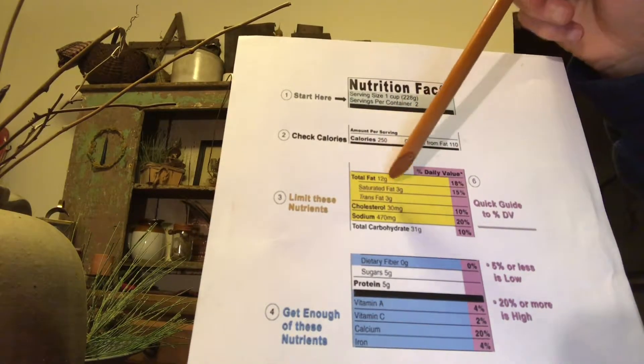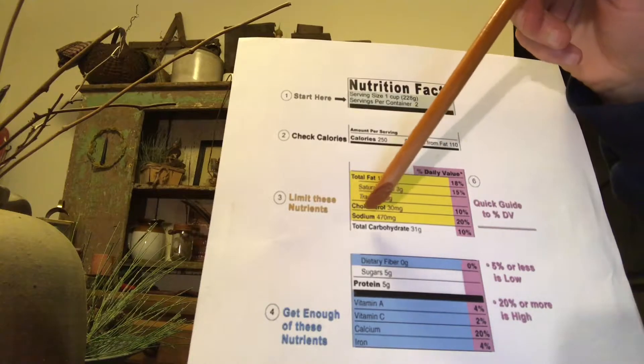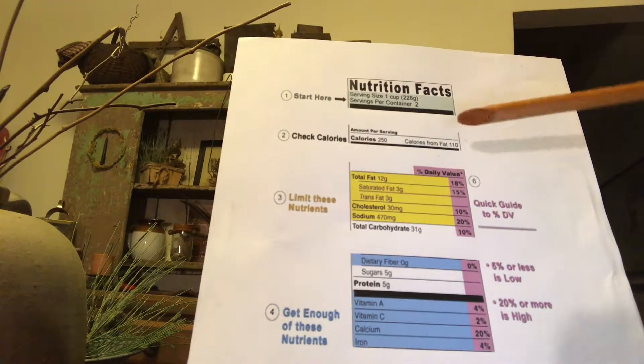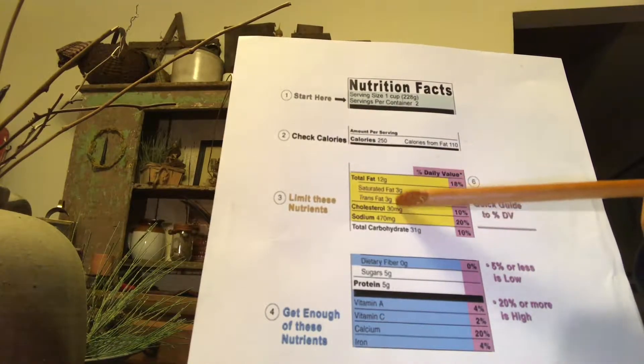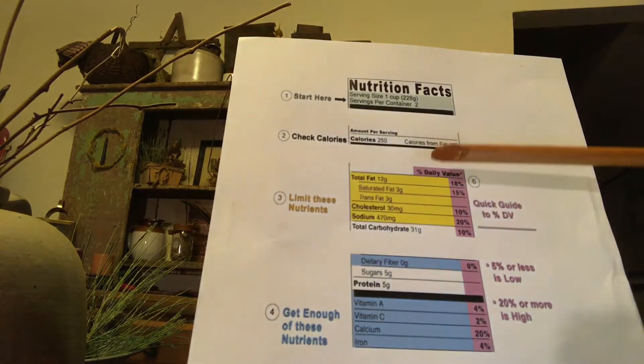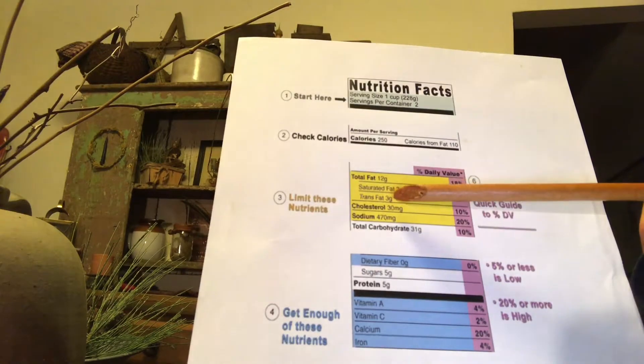saturated fat, trans fat, cholesterol, sodium, total carbs. I want to point out, they are measured in grams. Okay. So these are the things we want to limit, especially if you either have heart disease or if you're trying to prevent heart disease.